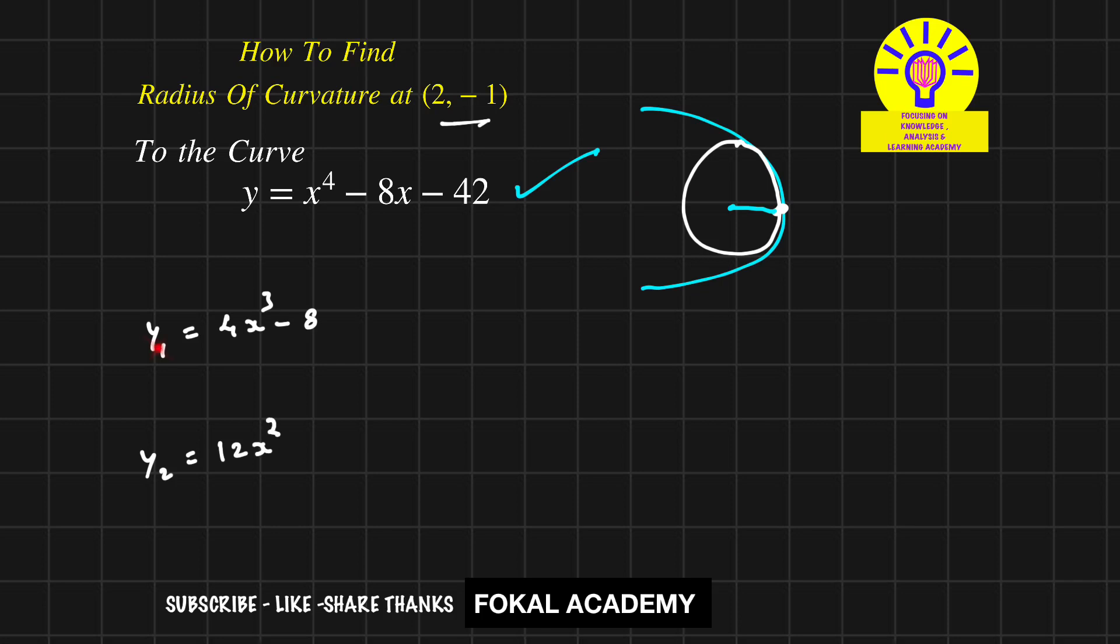Now we want the first derivative and second derivative at this point. Substitute this point in these two equations. So then we get y₁ at the point (2, -1), it would be equal to 4 × 2³ - 8, so it would be 32 - 8, thus equal to 24.